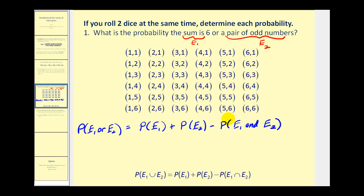Let's see if we can highlight the ones that have a sum of six to determine the probability of E₁. Here's a one and a five, two and a four, three and a three, four and a two, and five and a one. These are the successful events for having a sum of six. So the probability of E₁ would be five out of 36. Again, 36 being the total sample space.